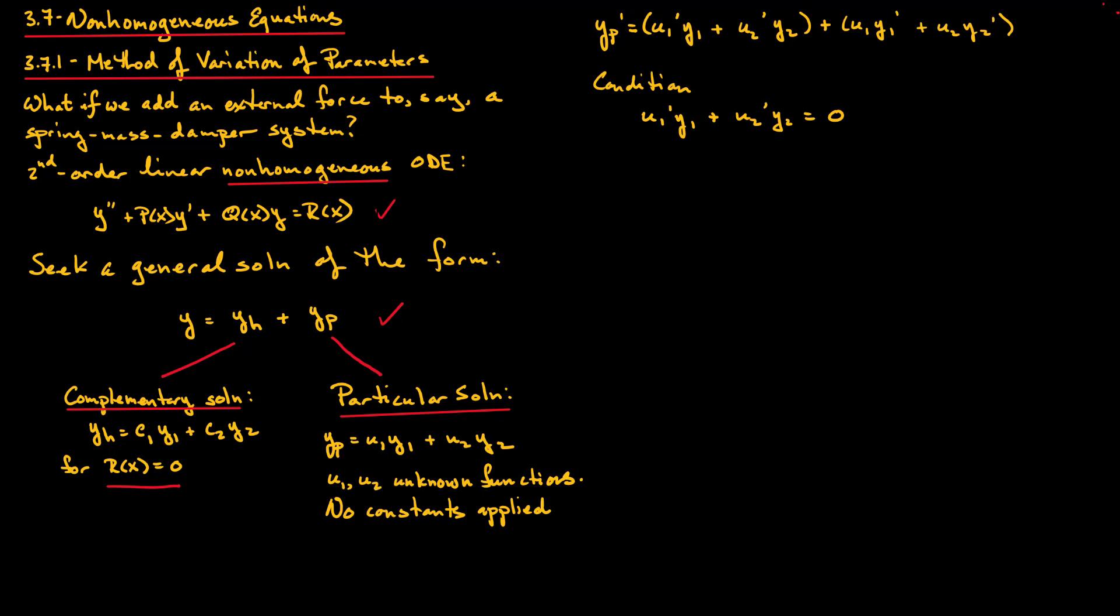We can do this because U1 and U2 are still unknown functions and are arbitrary at this point. What we notice is that this condition is in fact the first bracketed two terms in our first derivative for YP. This simplifies our YP' first derivative to U1Y1' + U2Y2'.